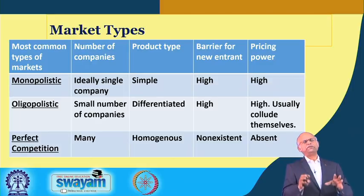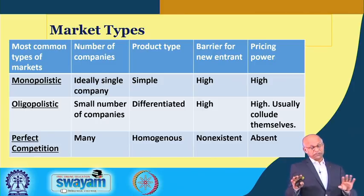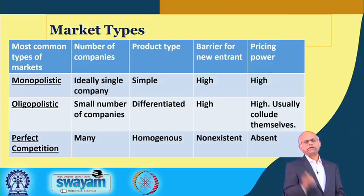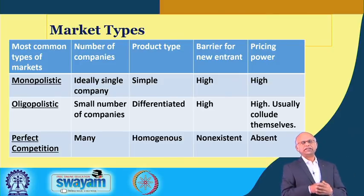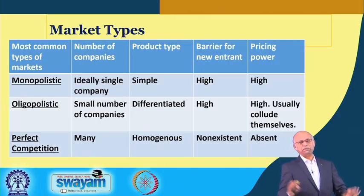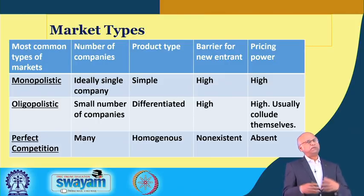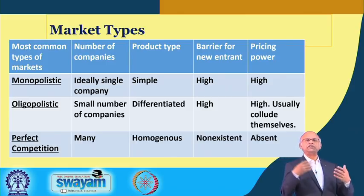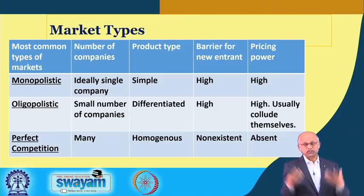Market types — this is a brief discussion; detailed knowledge should be gathered from a good economics book. There are three types: monopolistic, oligopolistic, and perfect competition. Monopolistic is almost a single company offering a single product to the entire segment — they have huge pricing power because whatever price they command, people will buy since there is no competing product. Entry barrier is also very high because they have acquired or developed technology others were not capable of, or they have access to strategic resources like mines that prevent others from entering the market.